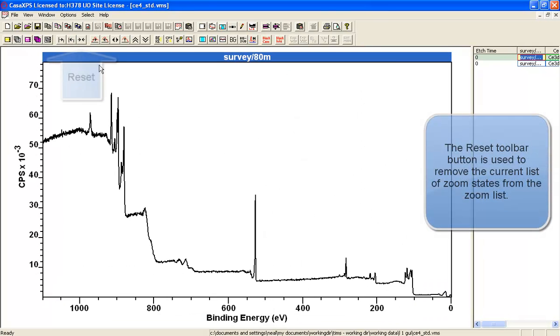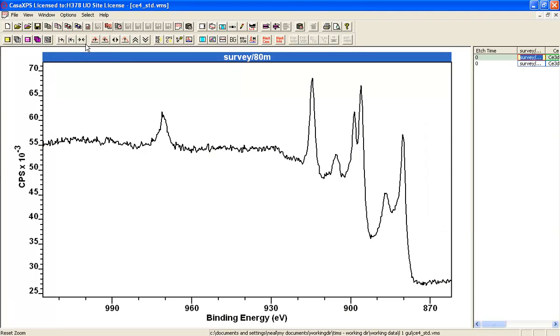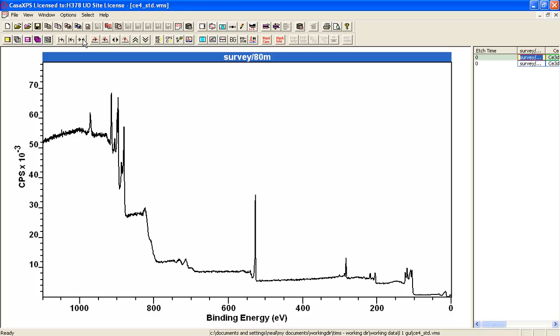If I want to clear this zoom list, I use the reset button, and when I press reset, the data zooms out completely, and the zoom list is empty.